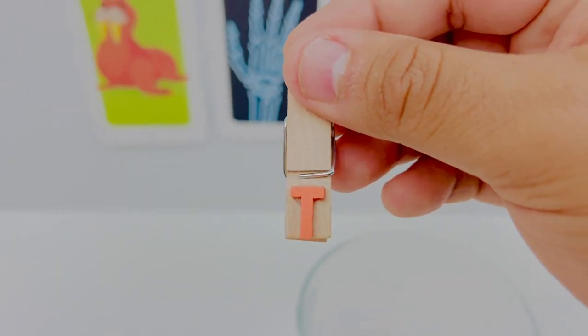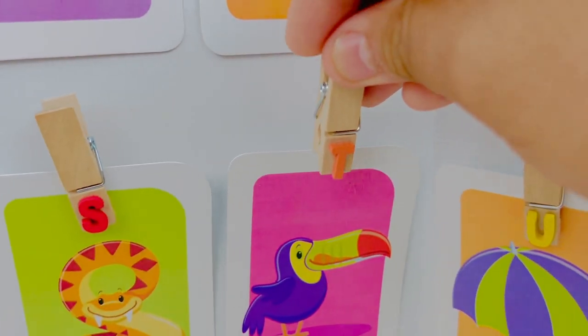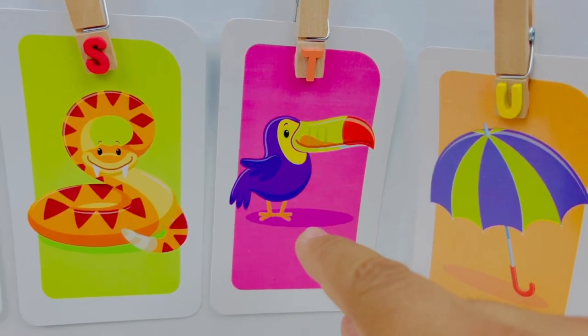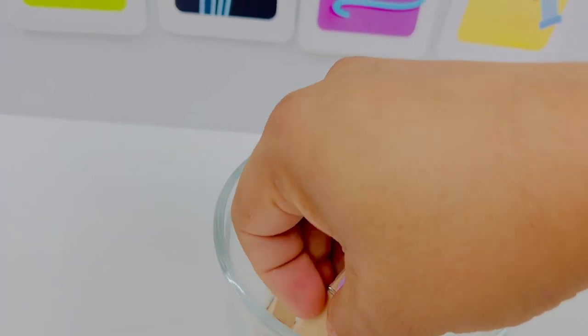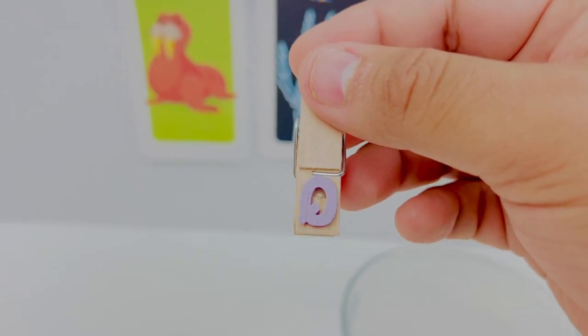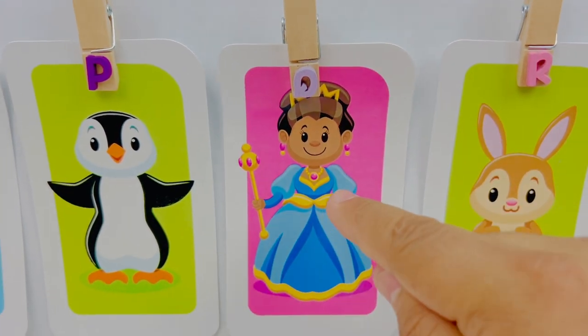This is letter T. Letter T is for toucan. T toucan. This is letter Q. Letter Q is for queen. Q queen.